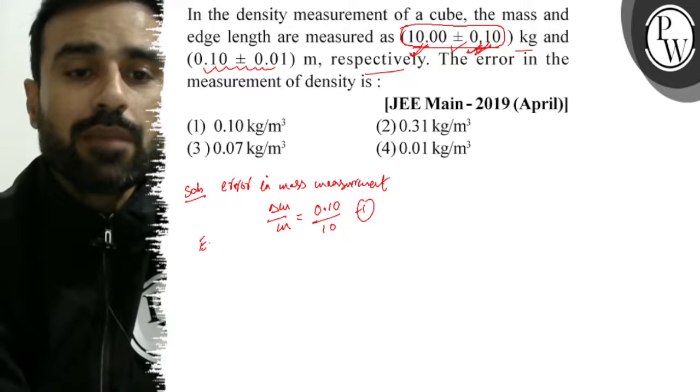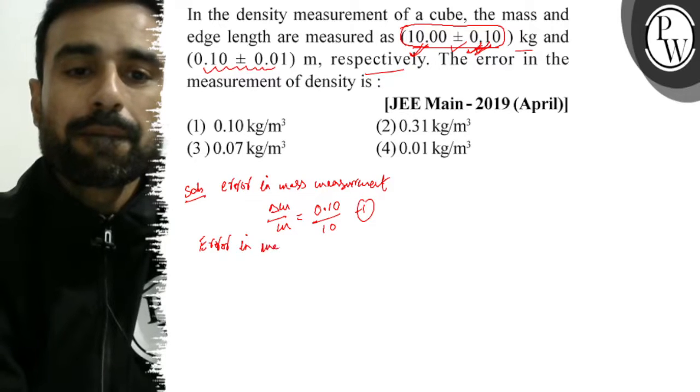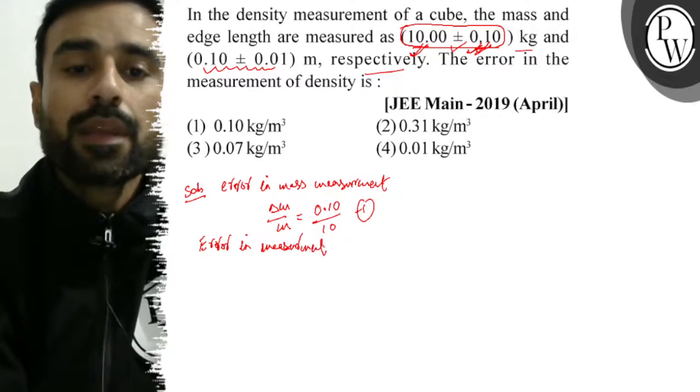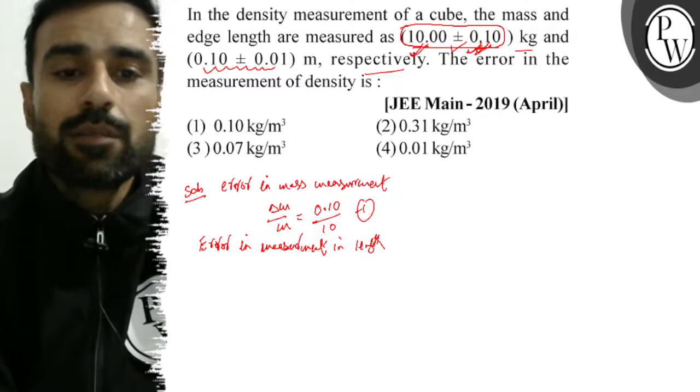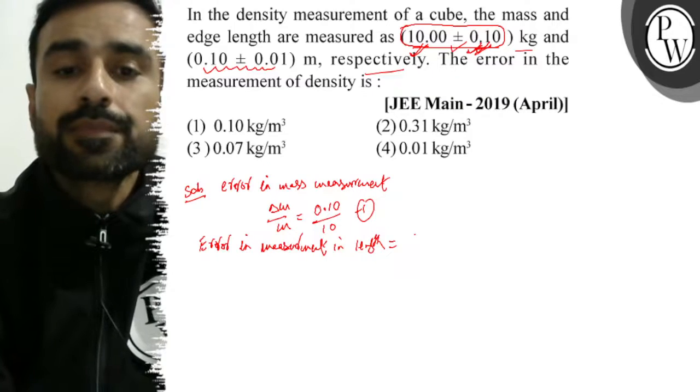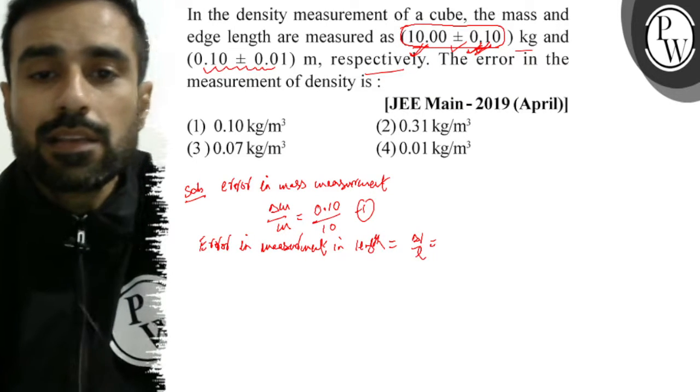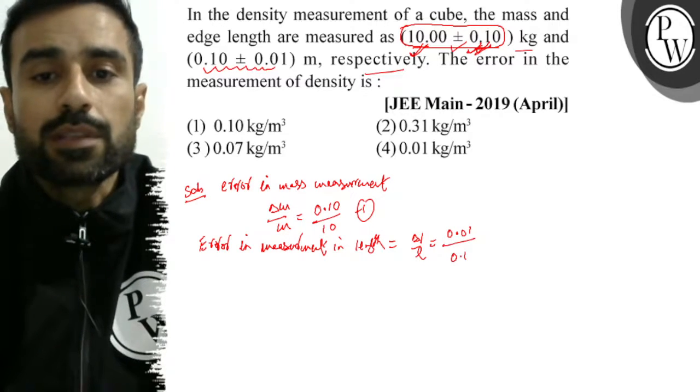Similarly, error in measurement of length. That is equal to delta l by l, and delta error in length is 0.01 upon length is 0.10.